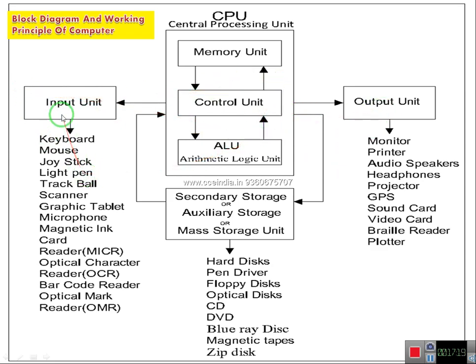We are using extra additional information from the input device. Input devices — the input device is all available. So the maximum input device is very easy. It is the input device. The mouse is very easy. Input device — the light pen is very easy. This is all input devices. Some input devices are all input devices.